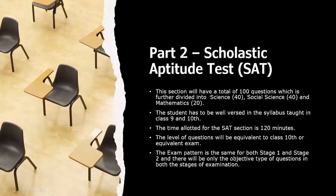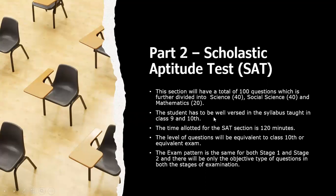Part two is the Scholastic Aptitude Test, based on what you study in school. It has 100 questions divided into Science, SST, and Maths. You need to be well versed in the syllabus taught in Class 9 and 10 — absolutely thorough with both years. Do not forget your Class 9 identities, formulas, and theorems. Topics like HCF, LCM, divisibility rules, algebraic identities, polynomials, triangles, and lines and angles from Class 9 are all examinable.